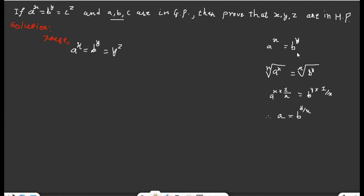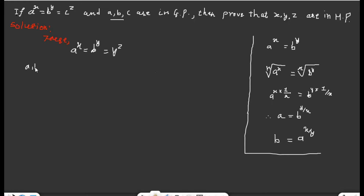Likewise, if you want to calculate the value of b, b equals a to the power x over y. Try to understand this relation first, then it is very easy to go ahead. Similarly, a, b, and c are in geometric progression, and this means b squared equals ac.